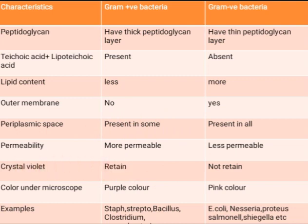Examples of gram positive bacteria include Staphylococcus, Streptococcus, Bacillus, and Clostridium. Examples of gram negative bacteria include E. coli, Neisseria, Proteus, Salmonella, Shigella, and many others.